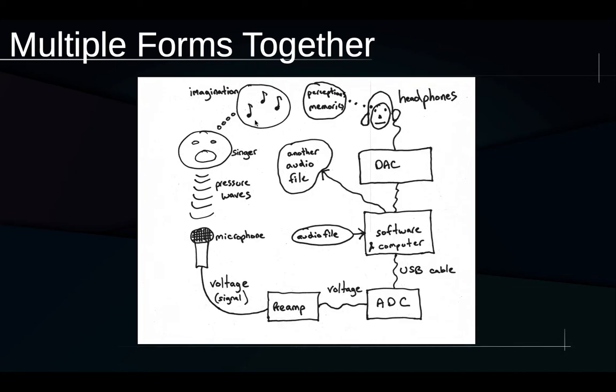The singer may have something in their imagination that is causing them to sing a certain way. That's resulting in pressure waves that are traveling some distance through the space to reach a microphone. The microphone is transducing those pressure waves into an electrical voltage. Maybe it goes through a preamplifier and becomes an even bigger electrical voltage. It goes into an analog-to-digital converter that turns it into digital measurements. And those measurements arrive at software and computer via a USB cable. And maybe in that software, an audio file is being read in. And maybe also another one is being created as a result of a recording process.